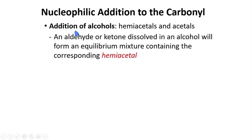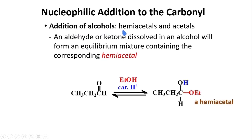Next is the addition of alcohols. You form hemiacetals and acetals in this case. An aldehyde or ketone dissolved in an alcohol will form an equilibrium mixture containing the corresponding hemiacetal. Oxygen has lone pairs and can act as a nucleophile. If you have a small amount of an acid, your acid can activate this oxygen, and the attack will occur to this carbon to give you the hemiacetal.